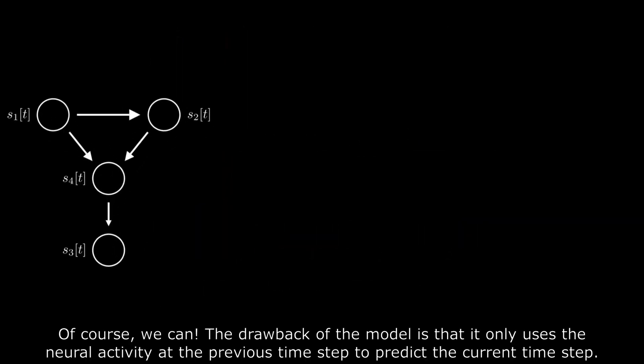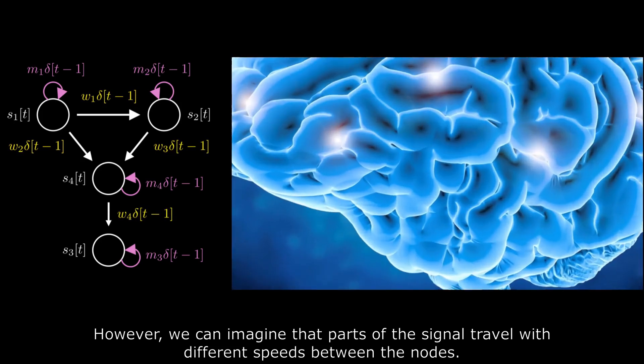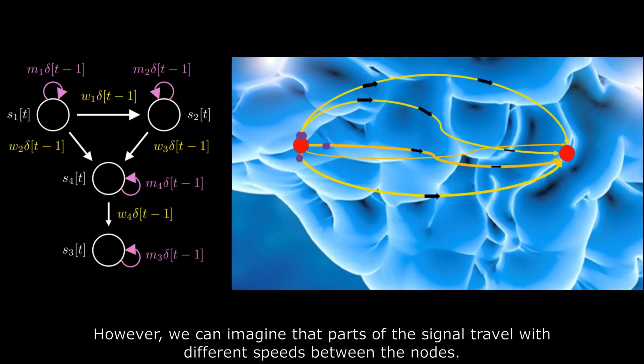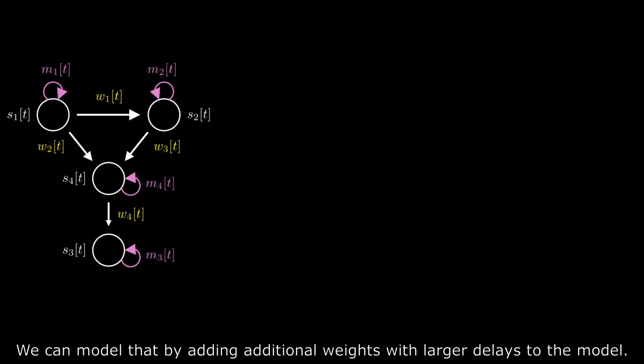Of course we can. The drawback of the model is that it only uses neural activity at the previous time step to predict the current time step. However, we can imagine that parts of the signal travel with different speeds between the nodes. We can model that by adding additional weights to larger delays to the model.